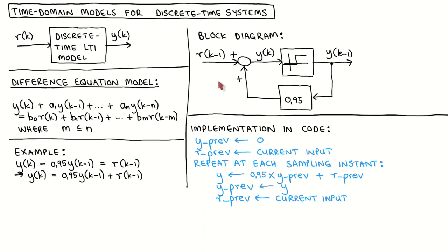It should now be obvious that we can easily implement the system as a computer program. Let's go through the pseudocode for our example. We first have to initialize the system, so we set the variable Y_previous to 0 and the variable R_previous to the current input value. At each sampling instant, we calculate the difference equation by taking 0.95 times Y_previous plus R_previous and storing that in variable Y. The current output and input become the previous output and input at the next time step, so we store the current output in Y_previous and the current input in R_previous. Our goal in this module is to design a digital controller, which can always be described with a difference equation, and it should now be clear that we can easily implement our designed controller as a computer program.